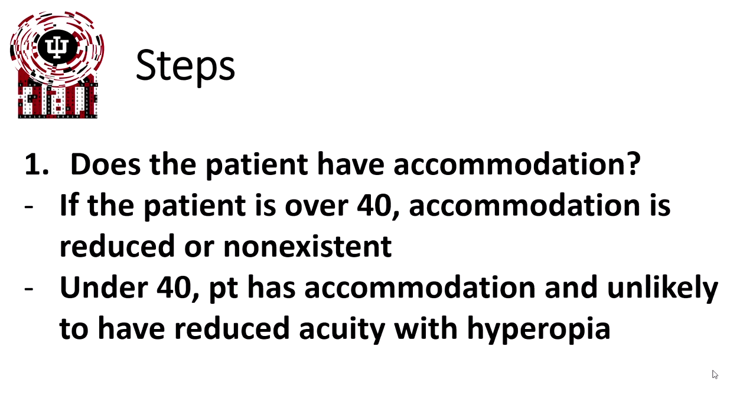So let's look through the steps of how to predict what the change in refractive error is. Does the patient have accommodation? Step one. Ask yourself, does the patient have accommodation? If the patient is over 40, accommodation is reduced or non-existent. Under 40, patient has accommodation and unlikely to have reduced acuities with hyperopia, especially at distance.